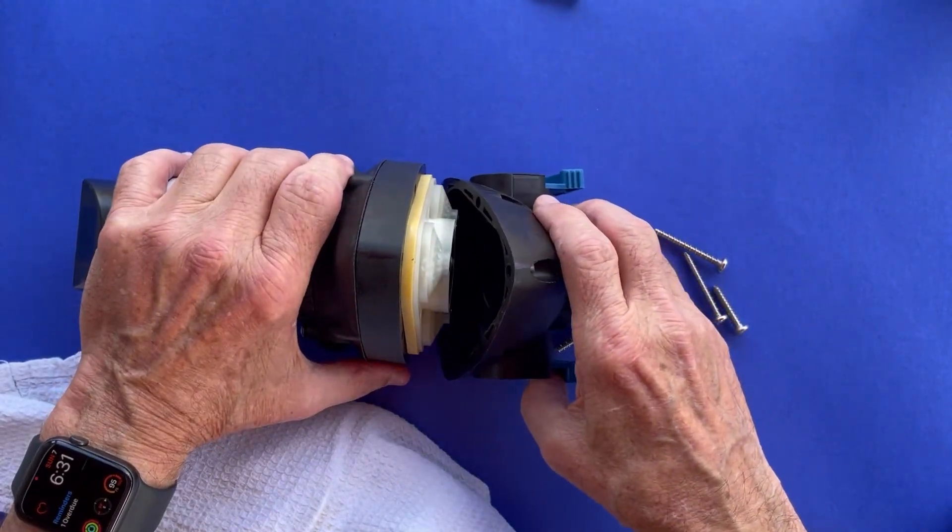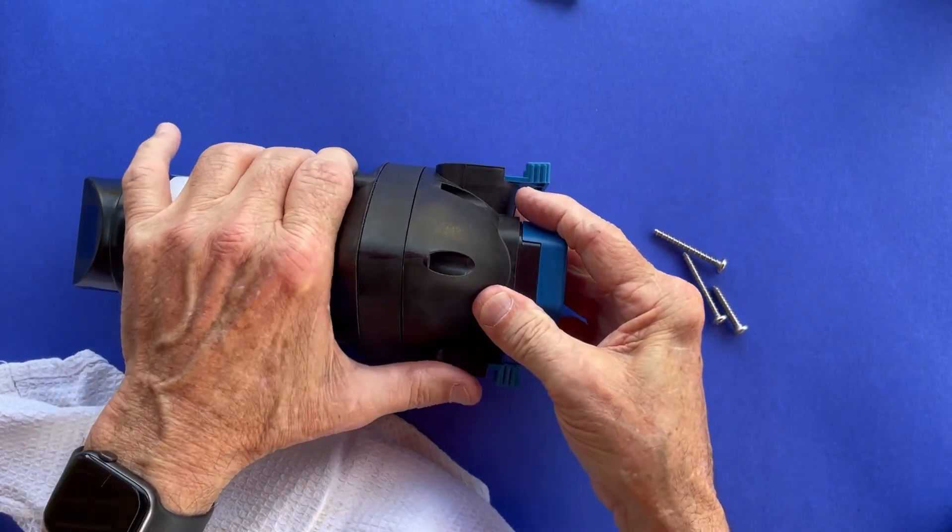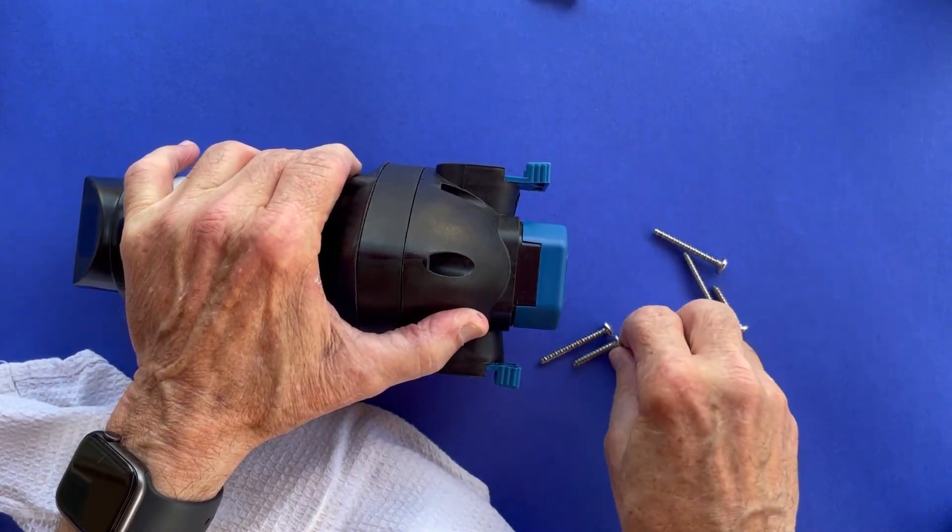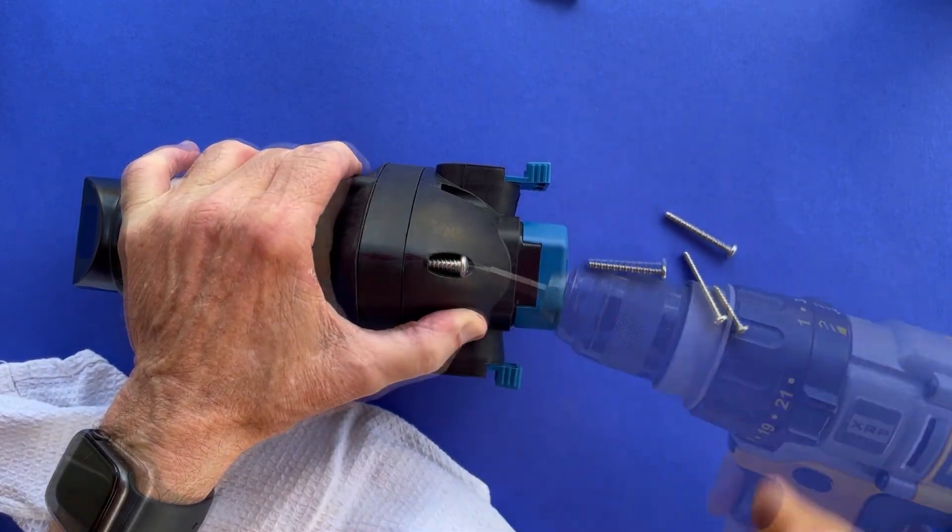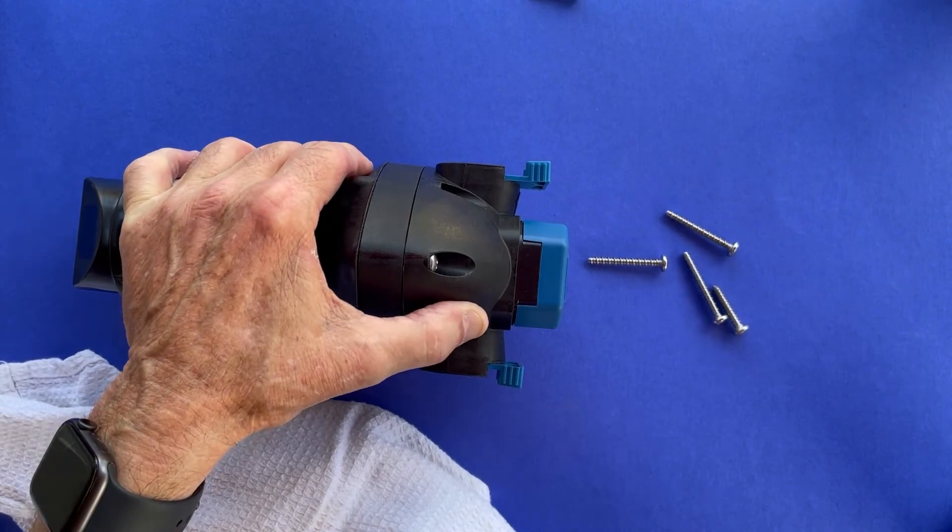Using the reference marks you made earlier, align the pump's upper housing and body. Loosely tighten the six screws, making sure the longer ones go in the proper holes with the extended plastic post.